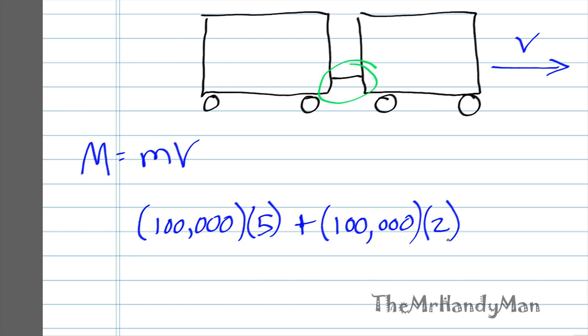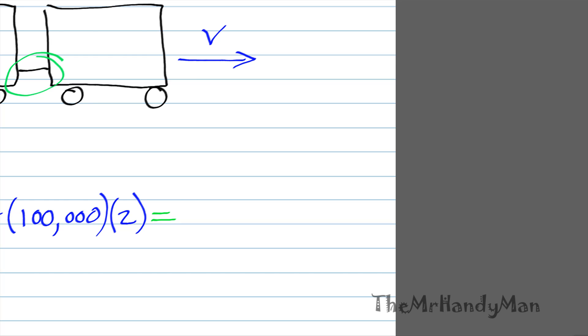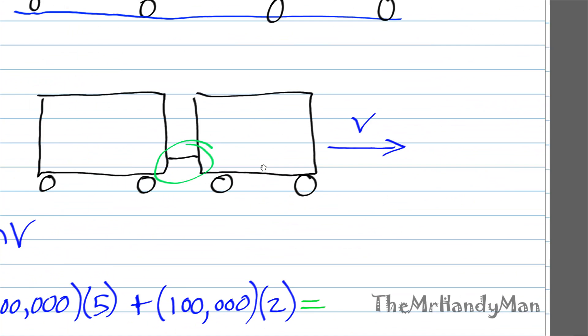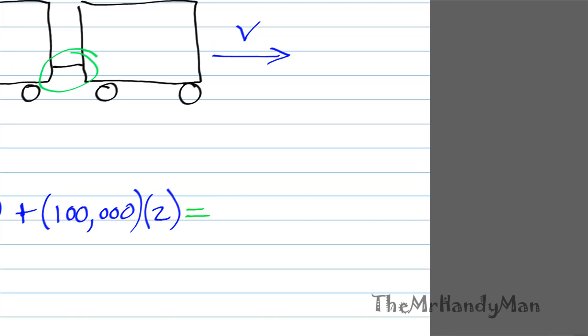So what we're going to do is shift to the situation right here where you have 200,000 pounds of mass and some speed that we don't know, V.